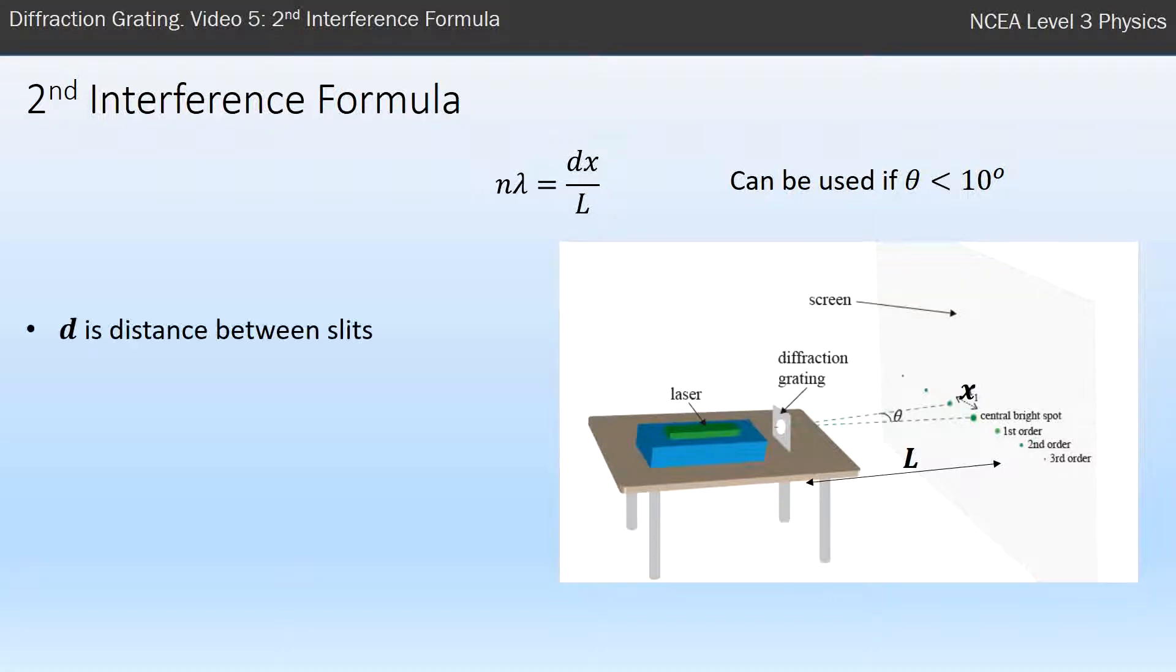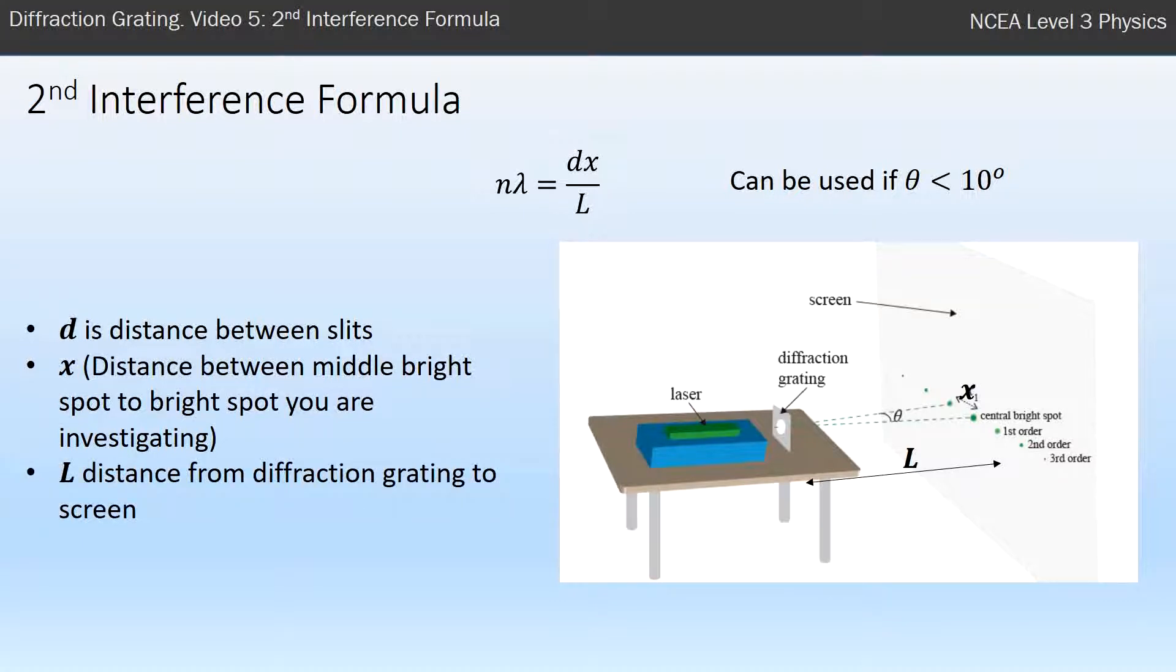What does everything mean? D is the distance between slits, the same as before in the other formula. X is the distance between the middle bright spot to the bright spot you're investigating. And L is between the diffraction grating to the screen or between the double slit to the screen.